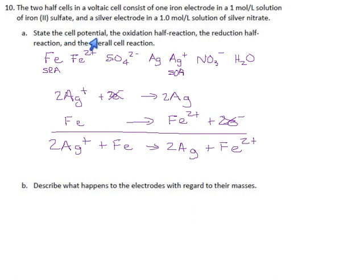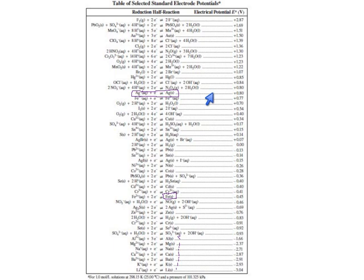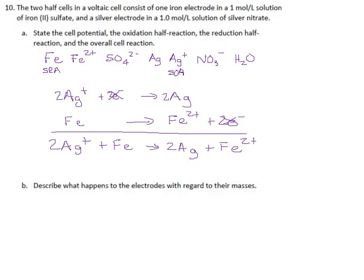Anyway, cell potential for this. We have silver getting reduced. I believe that's 0.80 volts. Yup. We get 0.80 volts. This reaction is as written in the data book, so I don't have to do any flip.